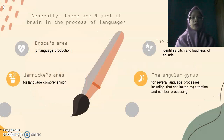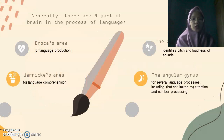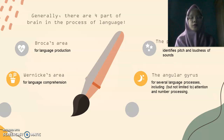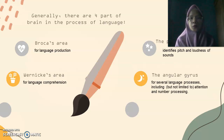Here are the parts of the brain involved in the process of language. First is Broca's area. Broca's area is located in the frontal lobe of our brain, and it is primarily responsible for language production, or speech production.